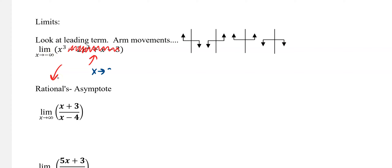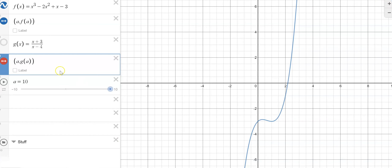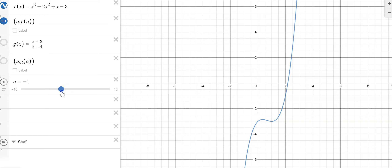X approaching infinity is going to the right, and X approaching negative infinity is going to the left, because infinity is on the right and negative infinity is on the left. So they're really just saying: what is this thing approaching as our X goes to the left? As we go to the left, you can see with our end behavior, our function goes down.